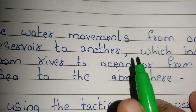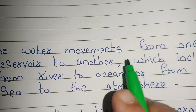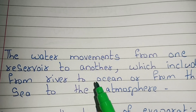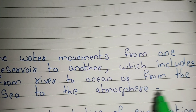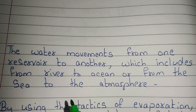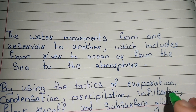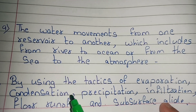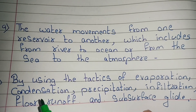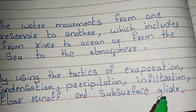The water moves from one reservoir to another, such as from river to ocean or from the sea to the atmosphere, by using the tactics of evaporation, condensation, precipitation, infiltration, floor runoff and subsurface glides.